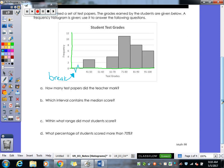So let's take a look at this. How many test papers did the teacher mark? So we're looking for how many total. So we have to look at each bar and figure out how many are in that section. So this first one if we look over here that's partially between two and four. So that means there's how many papers here. So three people got between a forty-one and a fifty.